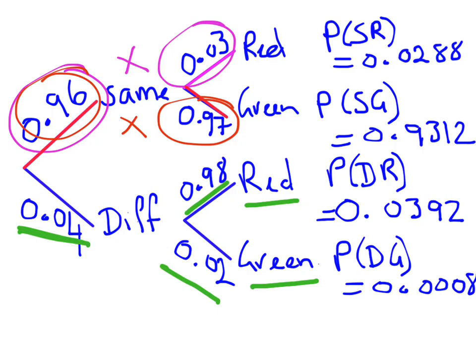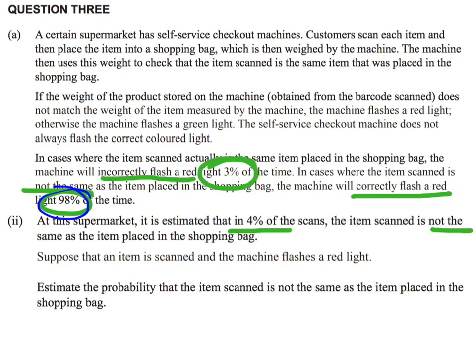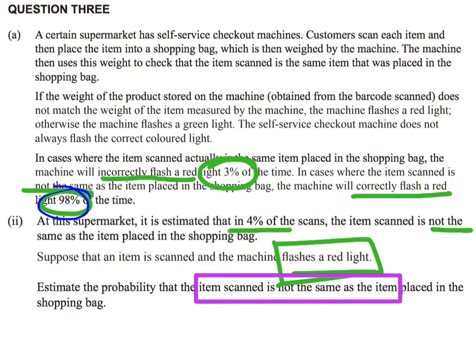Now let's look at the question. It says: suppose an item is scanned and we get a red light — that's our condition. We want to know the probability that the item scanned is not the same as the item in the bag, given that it is flashing a red light.